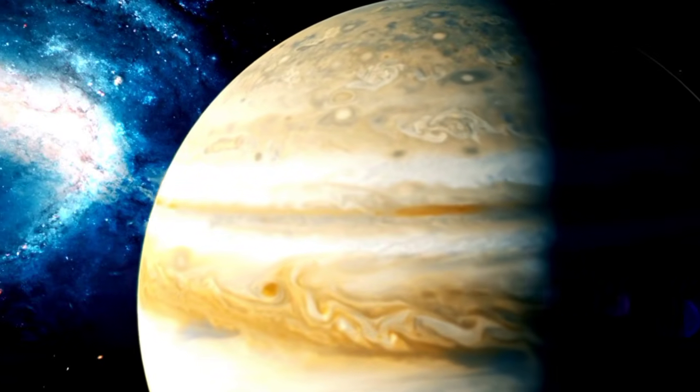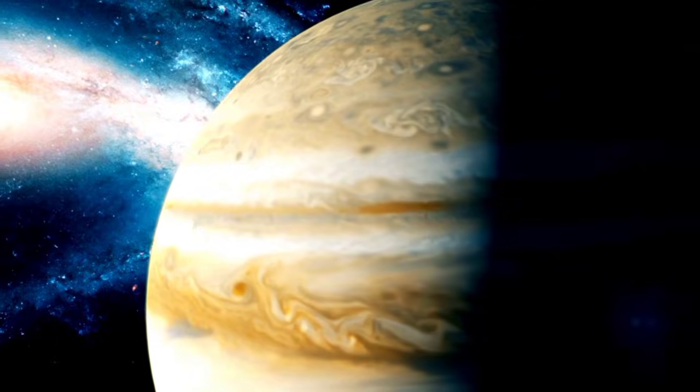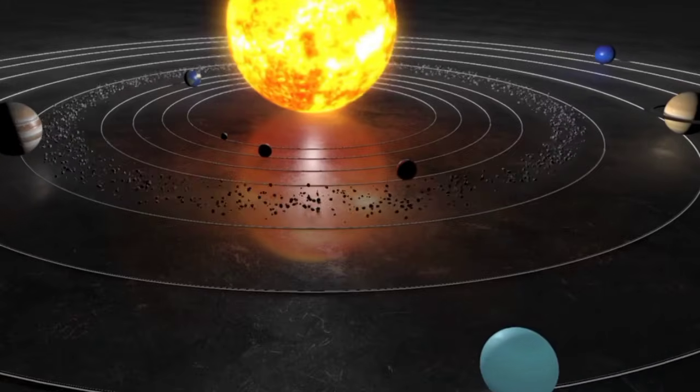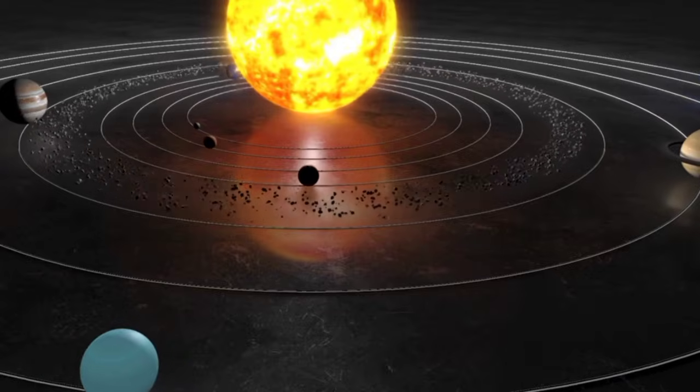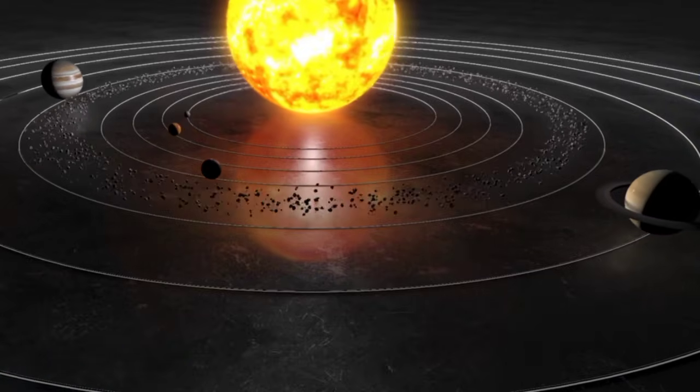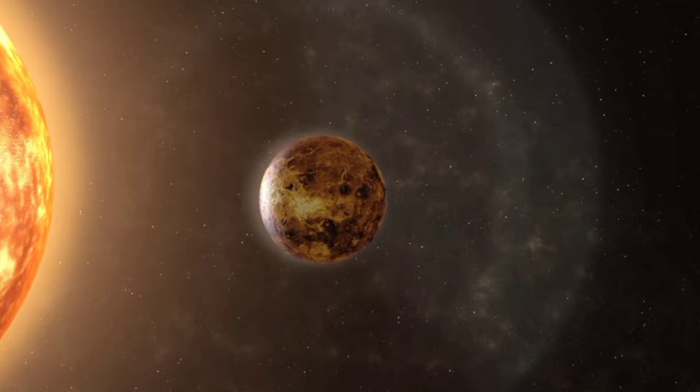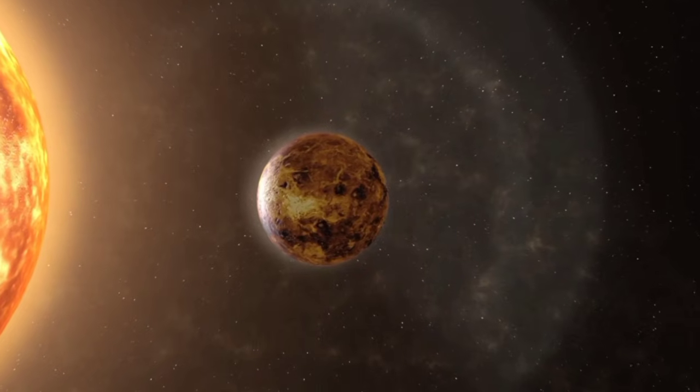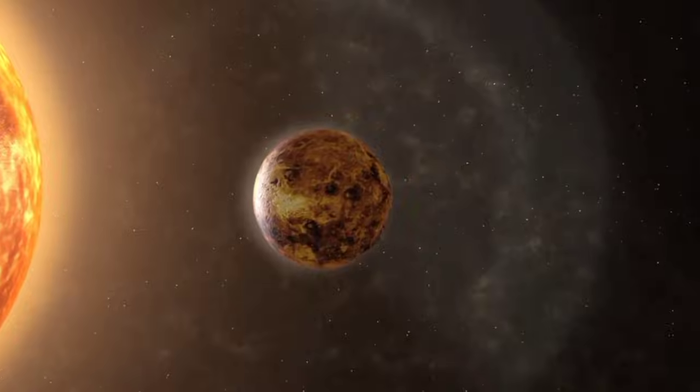Simulations have shown that the gravitational influence of larger planets such as Neptune, Jupiter, and Saturn has maintained Pluto's orbit for billions of years, preventing destabilization. Without these massive planets exerting their gravitational forces, the solar system would be far more chaotic.